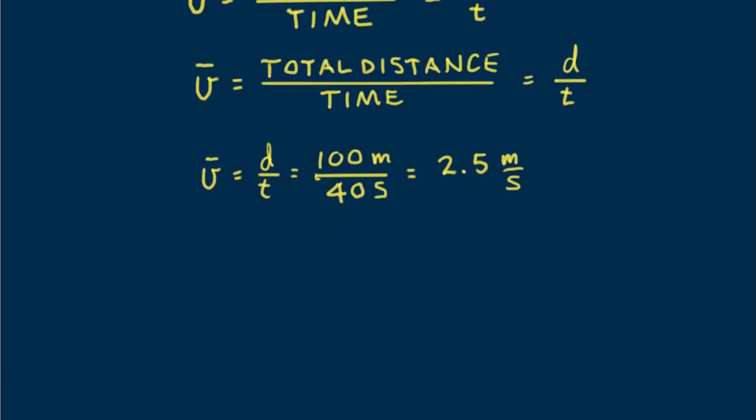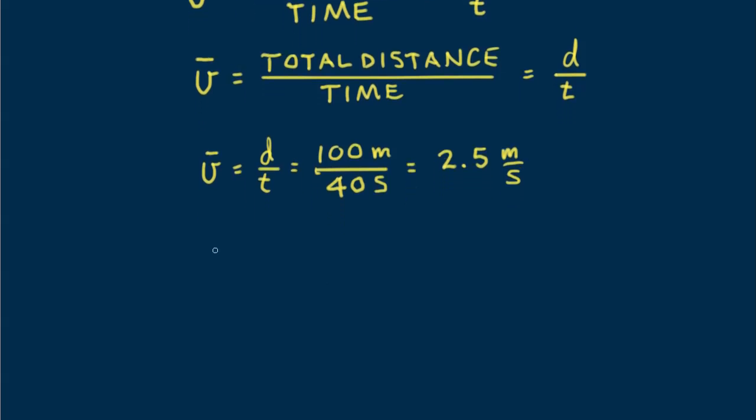We can rearrange this equation and express it for distance. d equals average speed times time. Then we see that if you walk an average speed of 2.5 meters per second, for 100 seconds, the distance you travel is 250 meters.